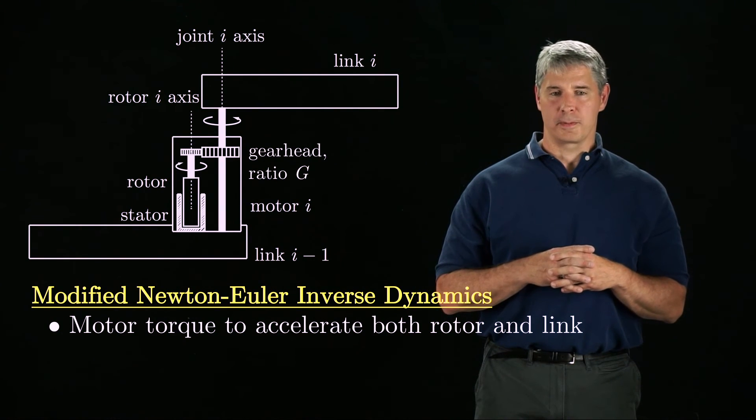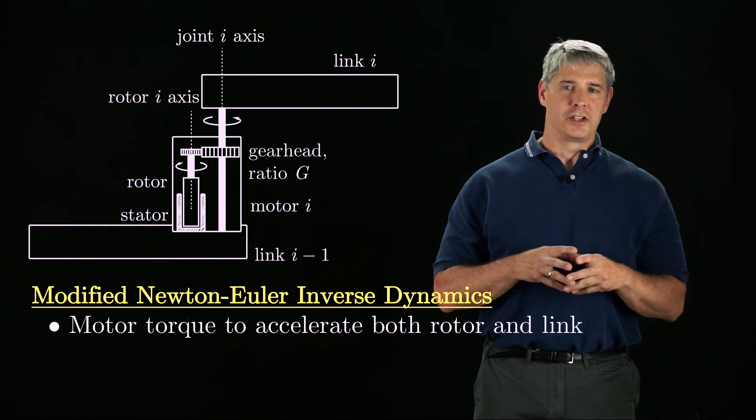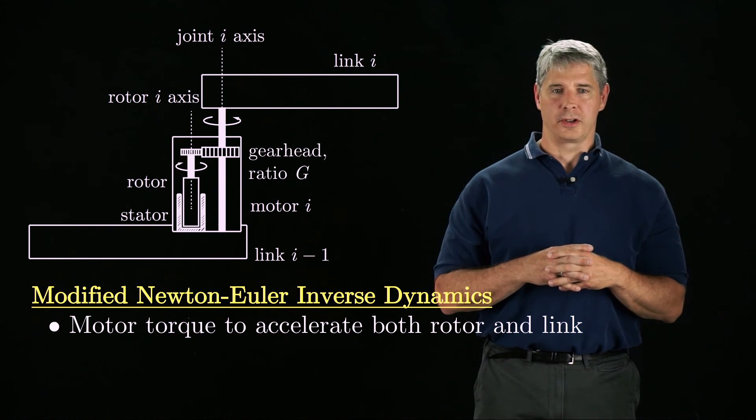For electric motors, the torque is proportional to the current through the motor, so for each motor the robot controller could command the current proportional to the calculated torque.